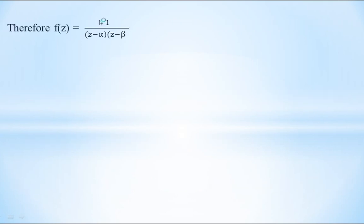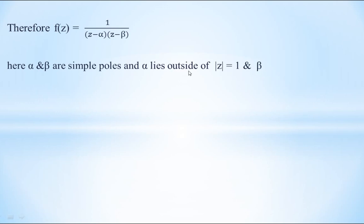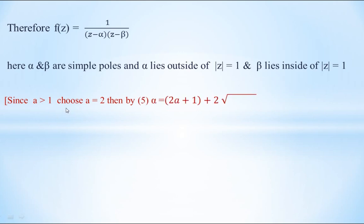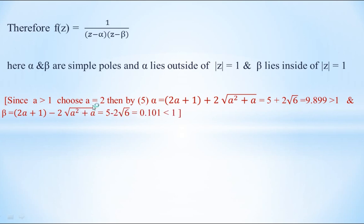Therefore f(z) can be rewritten as f(z) = 1 / [(z − α)(z − β)], where α and β are simple poles. We claim that α lies outside the circle |z| = 1 and β lies inside the circle |z| = 1, since a > 1. To verify, choose any value of a greater than 1, say a = 2.